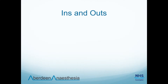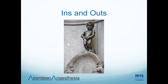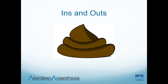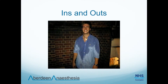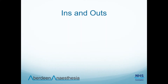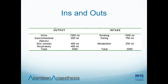Now that we know the total volume of fluid in the body, we need to think about the ways we gain and lose fluid and how this changes in disease states. In a 24-hour period, a 75 kg man will lose 1,500 mls in urine, 200 mls in faeces, 400 mls in sweat, and 400 mls from his respiratory tract. The sweat and respiratory losses are known as insensible losses as we can't easily measure them. To balance this, he needs to take in 1,500 mls by drinking, 750 mls from eating, and 250 mls from metabolism — the latter coming from cellular respiration and water produced by the mitochondria during the electron transfer chain.